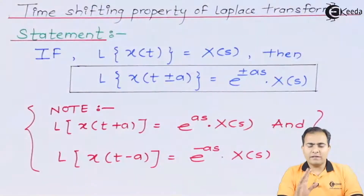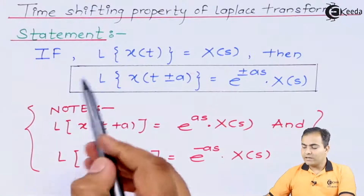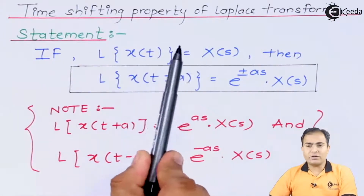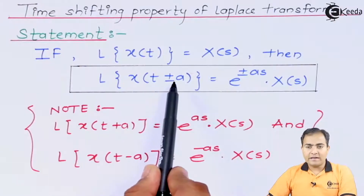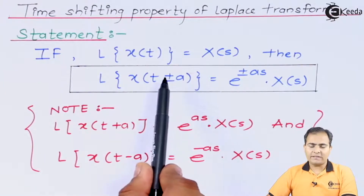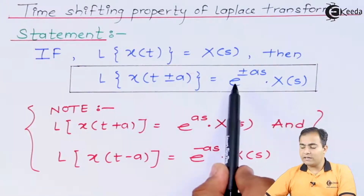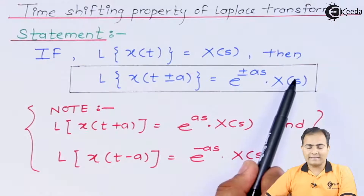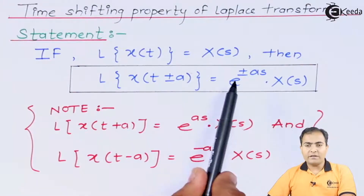First of all we will study the statement: what is it? If the Laplace transform of x(t) is X(s), then if we add a delay — it can be plus a or minus a — then the result is directly e to the power plus or minus as, multiplied by X(s). This is the statement that we are going to prove.